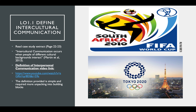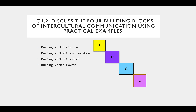So intercultural communication is quite simply when people of different cultures interact with one another. In the textbook we're going to unpack that a little more, because it can't be that simple — we need to go deeper. Learning outcome 1.2 discusses the four building blocks that make up our intercultural communication definition: the first is culture, the second is communication, the third is context, and the fourth is power — or just remember 'PC to the power of three' as a fun way to recall the four building blocks.